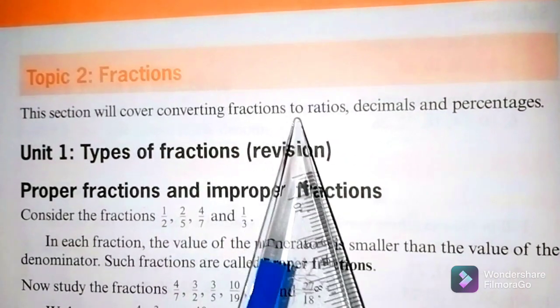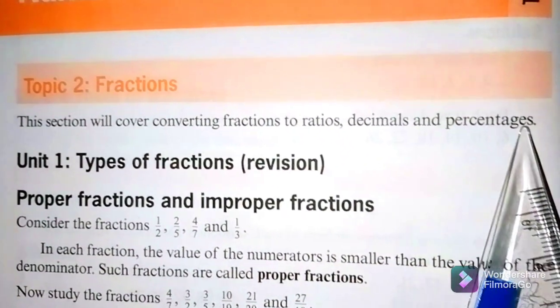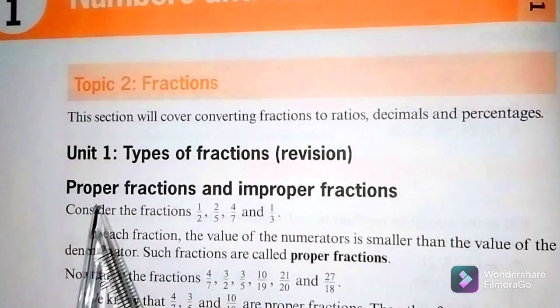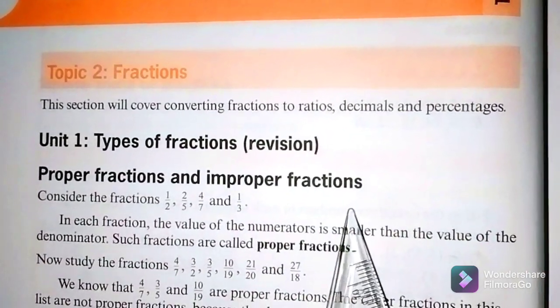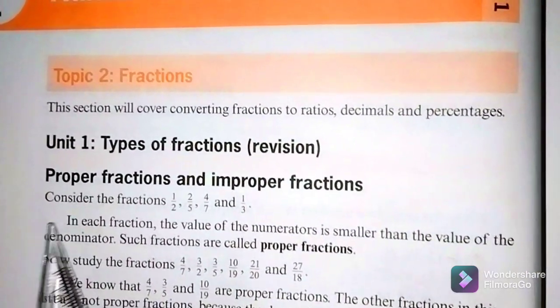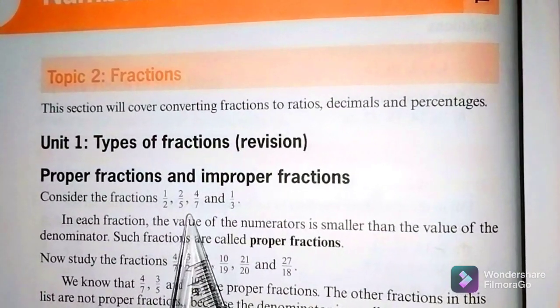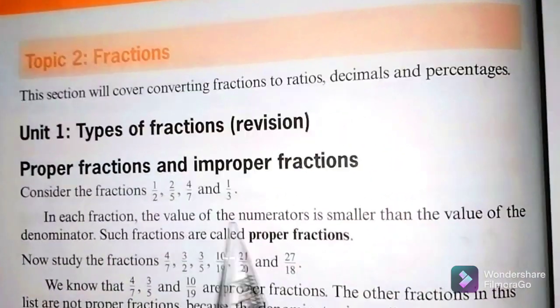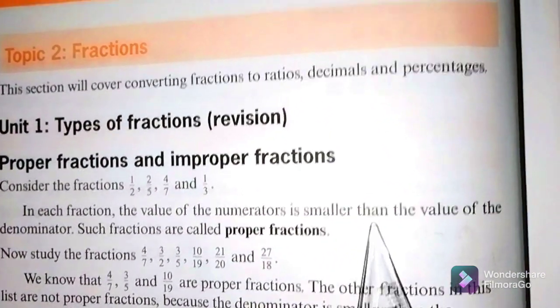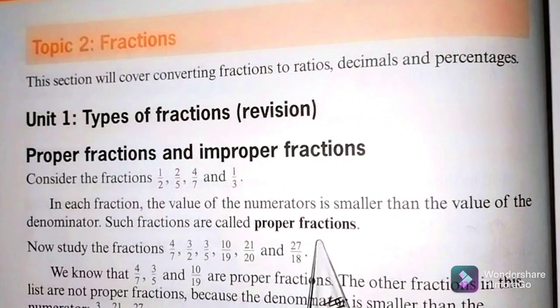This section will cover converting fractions to ratios, decimals and percentages. The first part is types of fractions. We have proper fractions and improper fractions. If we consider these fractions: 1 over 2, 2 over 5, 4 over 7, and 1 over 3 — in each fraction the value of the numerator is smaller than the value of the denominator. Such fractions are called proper fractions.